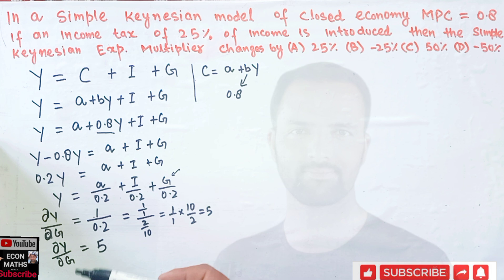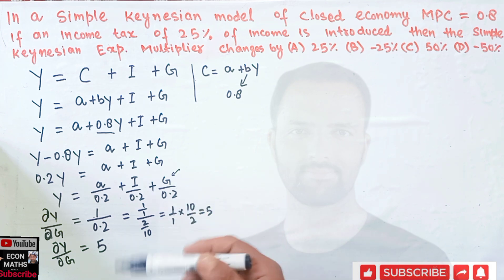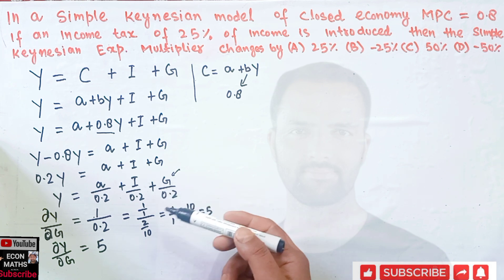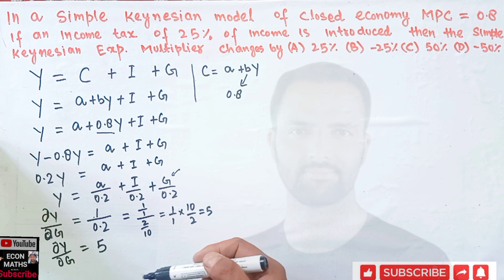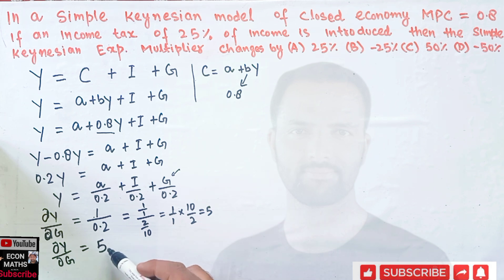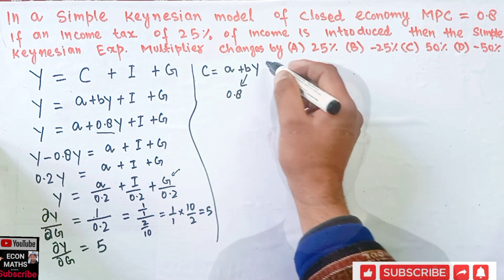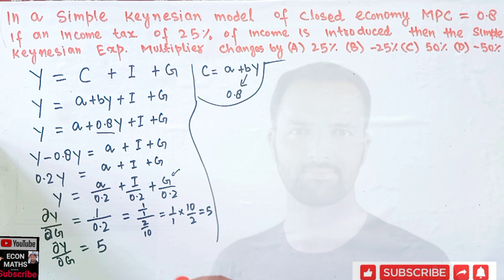This simply means if government expenditure changes by 1 unit, our income will change by 5 units — our income changes by a factor of 5. If government expenditure increases by 100 million dollars, then our GDP will change by 500 million dollars. This is the concept of the government expenditure multiplier. Now coming back to the question: when there is an income tax of 25 percent.